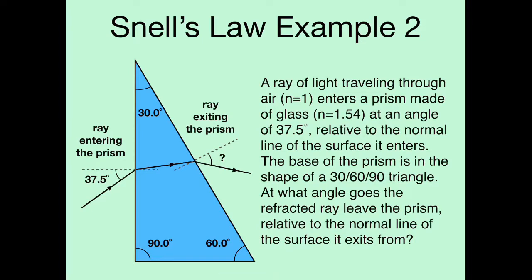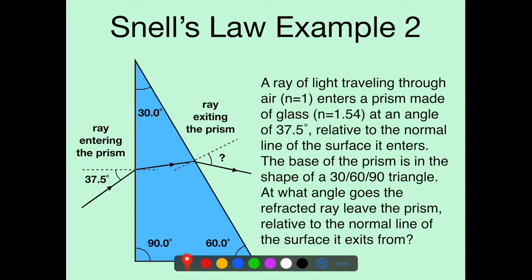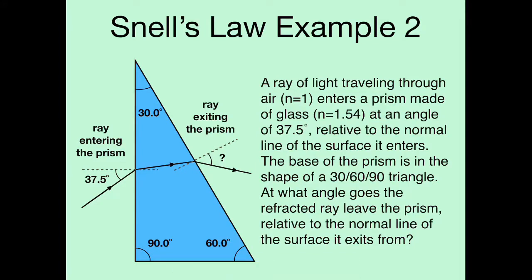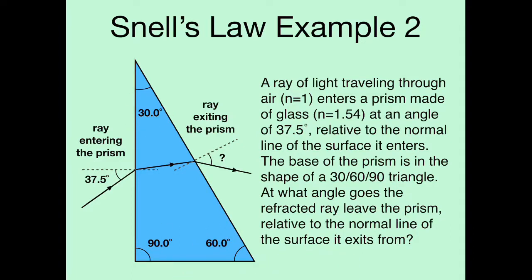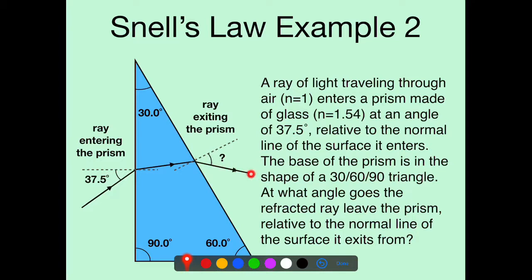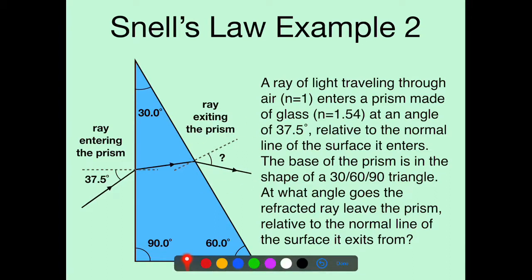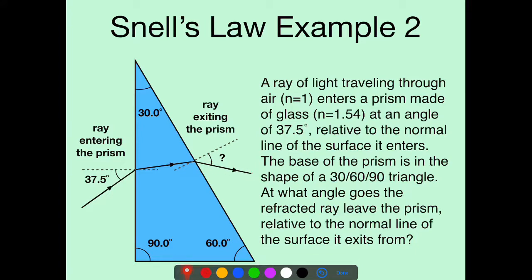In this next example, we have a ray of light traveling through air (N = 1) which enters a prism made of glass. The ray enters at an angle of 37.5 degrees relative to the normal line. The base of the prism is a 30-60-90 triangle — 30 degrees at the top, 90 degrees at one corner, and 60 degrees at the other. The ray goes into the prism, refracts, travels in a straight line, exits the prism, and refracts one more time. The question is: at what angle does the exiting ray travel relative to the second normal line?